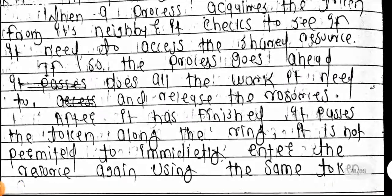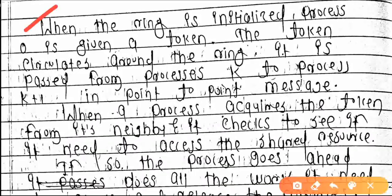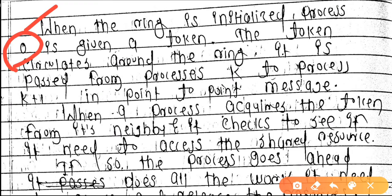When the ring is initialized, process zero is given a token. Whenever we go to any hotel or restaurant, there is a token system — a token is given by the receptionist at the counter for your order. Similarly, process zero is given the token to begin.